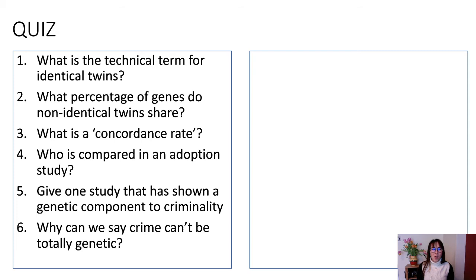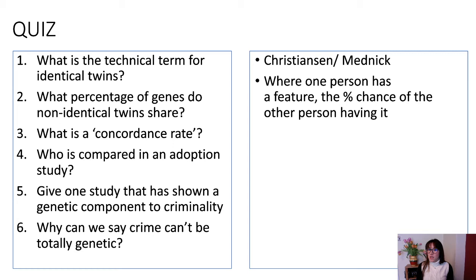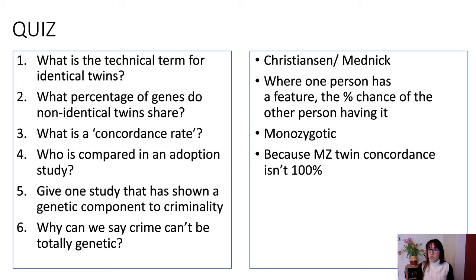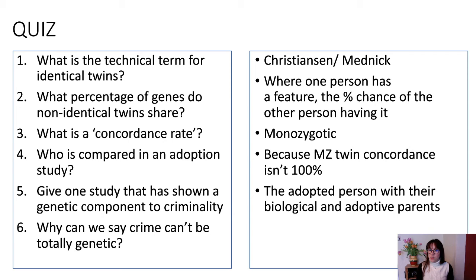Have a go at this second mix-and-match quiz. What is the technical term for identical twins? What percentage of genes do non-identical twins share? What is concordance rate? Who is compared in an adoption study? Give one study that has shown a genetic component to criminality. And why can't we say crime is totally genetic? Your answers to choose from: Christiansen and Mednick; where one person has a feature, the percentage chance the other person has it; monozygotic; because MZ twin concordance isn't 100%; the adopted person with their biological and adopted parents; about 50%.